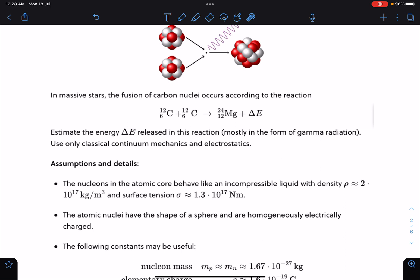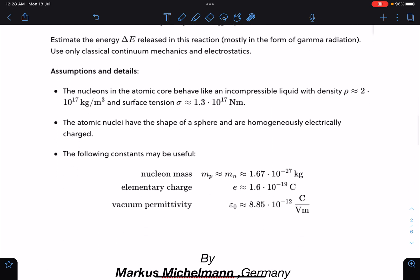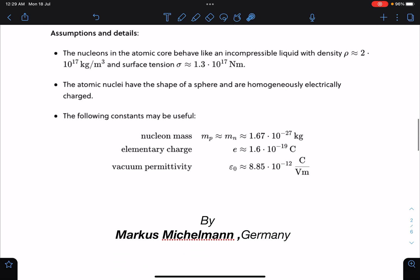Assumptions are given in this problem: The nucleons in the atomic core behave like incompressible liquid with density ρ ≈ 2 × 10^17 kg/m³ and surface tension σ ≈ 1.3 × 10^17 Nm. The atomic nuclei have the shape of a sphere and are homogeneously electrically charged. The following constants values are given.